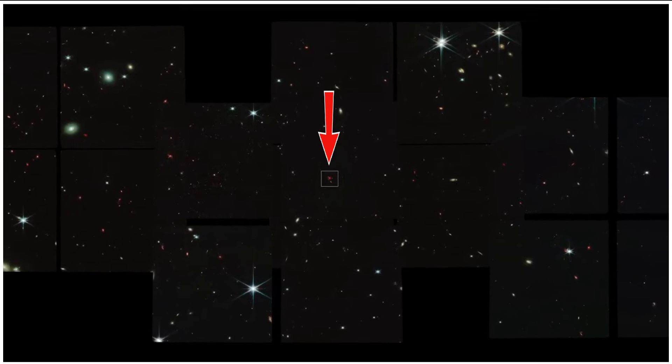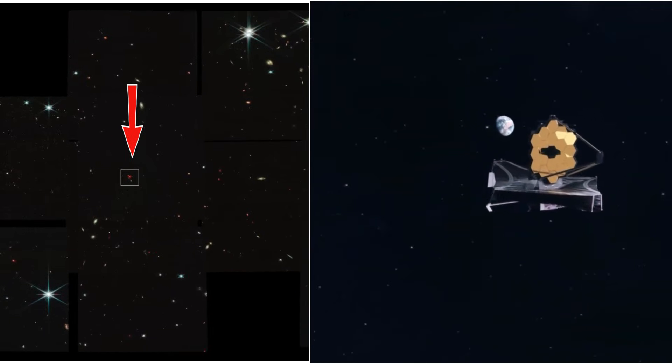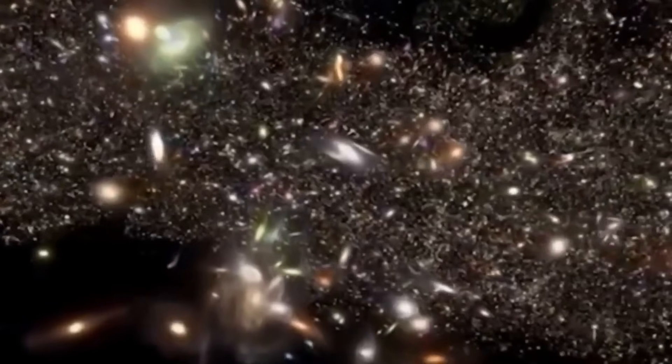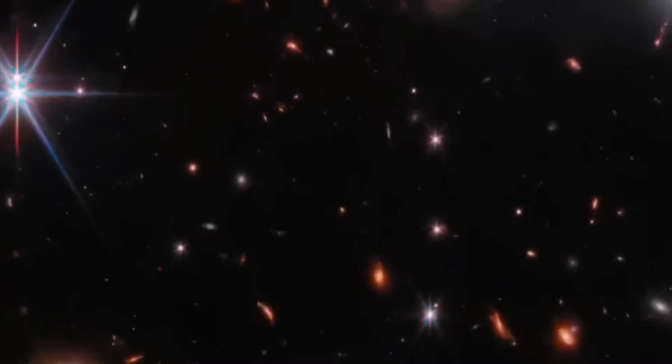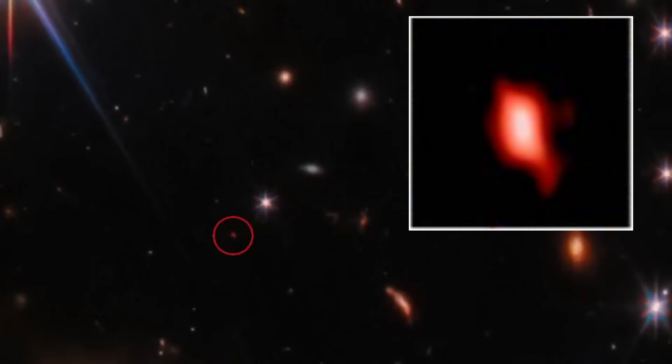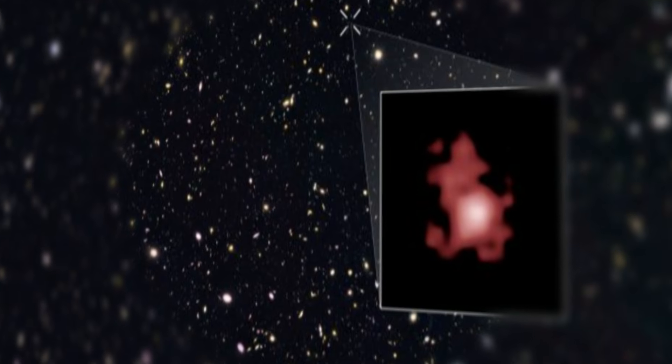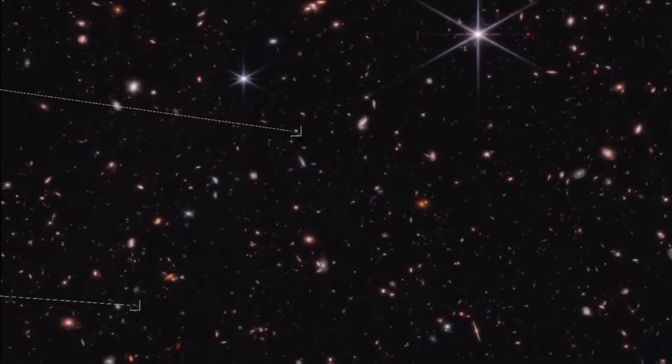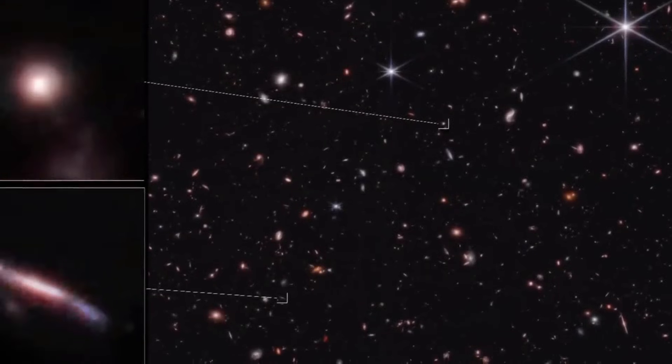Take a look at the latest deep field image captured by the James Webb Space Telescope. It has revealed something truly mysterious in the universe: a strange object that is unusually bright and has an odd shape, leaving scientists stunned. But that's not all.